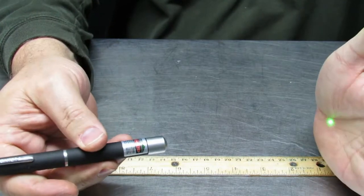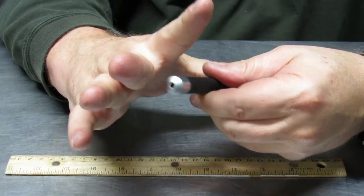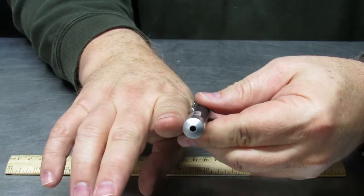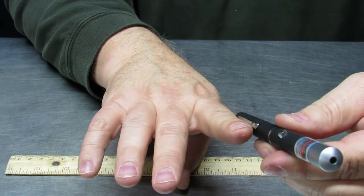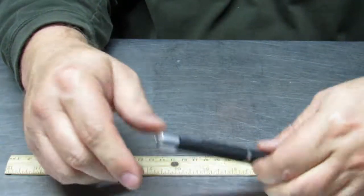The same for this laser pointer. If we want to know how big it is, so it'll fit in our pocket or whatever, we can guess based on how it fits in our hands, how big it actually is. And again, it's going to measure to be just about six inches.